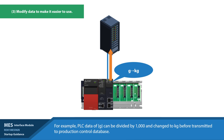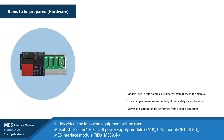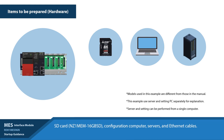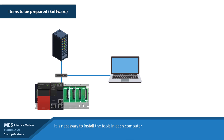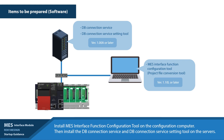Up next, we'll talk about the hardware used in this example scenario. In this example, the following pieces of hardware were used: Mitsubishi Electric's PLC IQR power supply module R61P, CPU module R120, CPU MES interface module RD81MES96N, SD card NZ1MEM-16GB, a configuration computer, a server, and Ethernet cables. Please note that it's necessary to install the tools in the respective computers, install the MES interface function configuration tool on the configuration computer, and install the DB database connection service and DB connection service setting tool on the server. For the PLC program, please use MELSOFT GXWorks3.